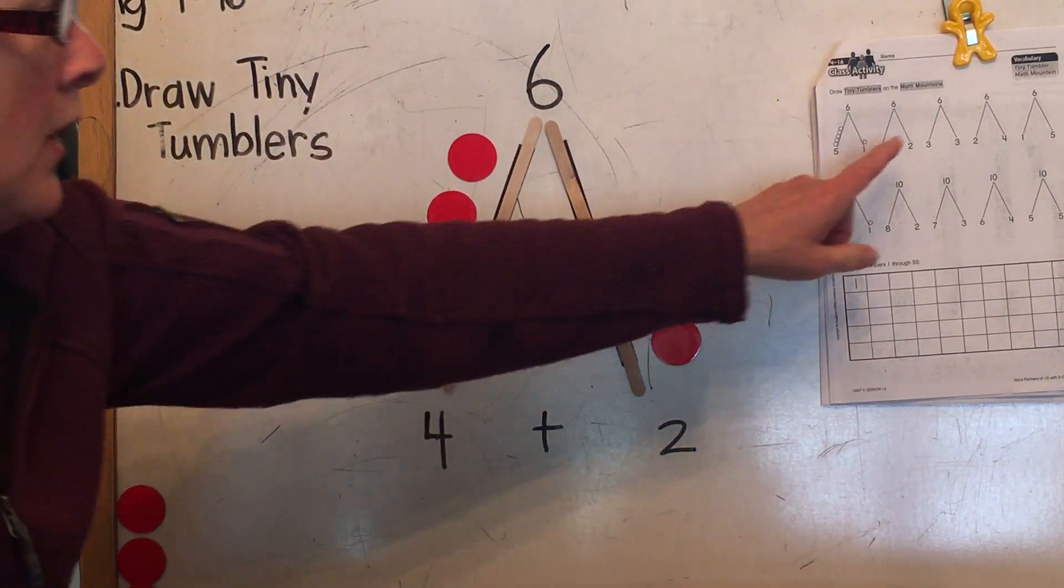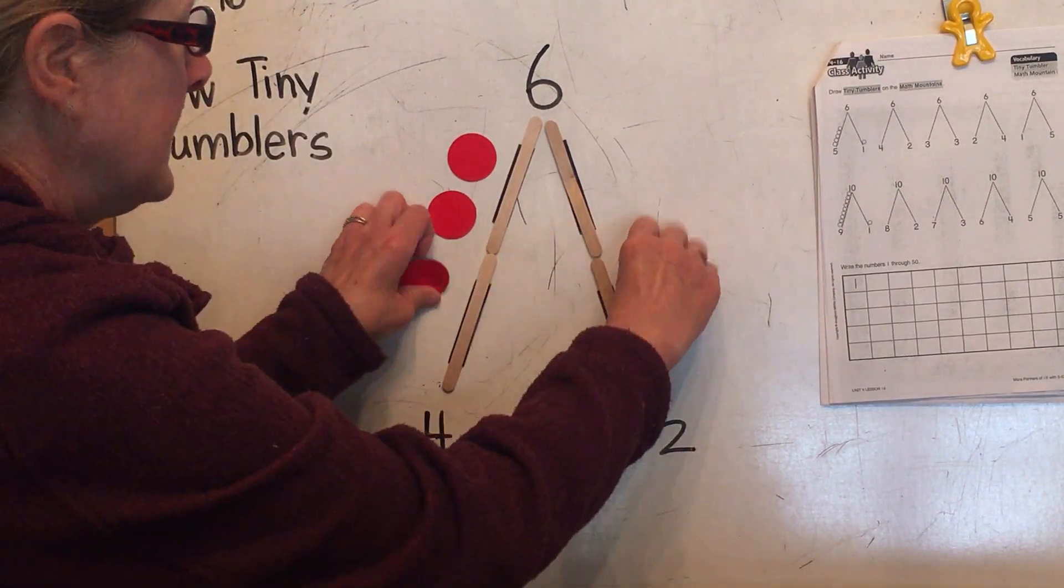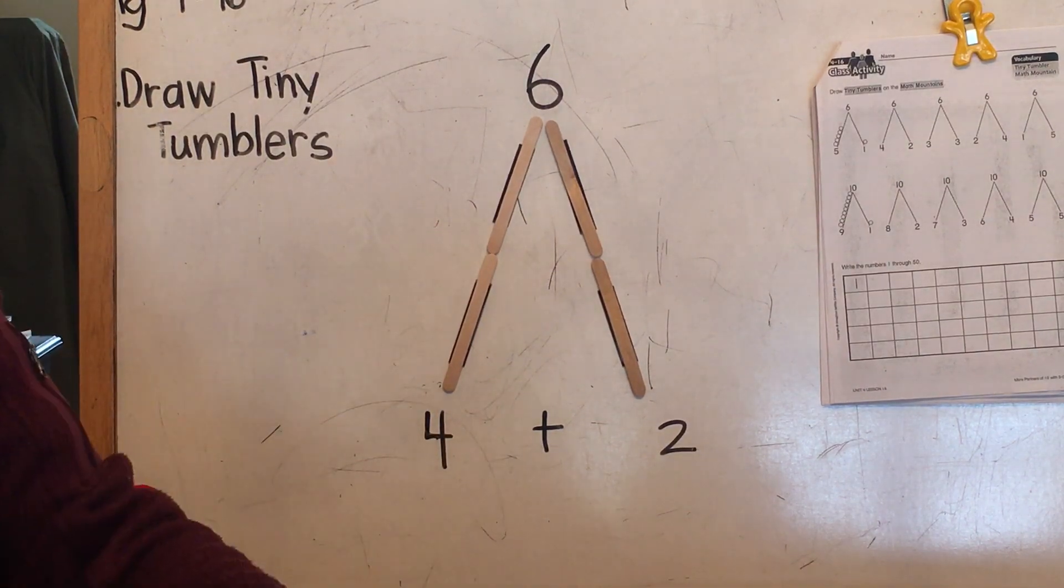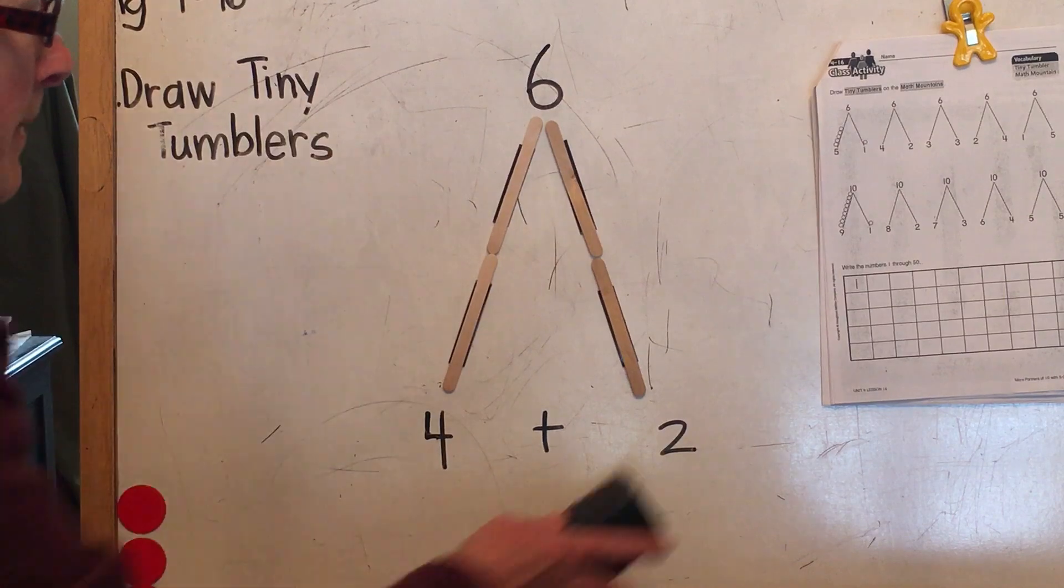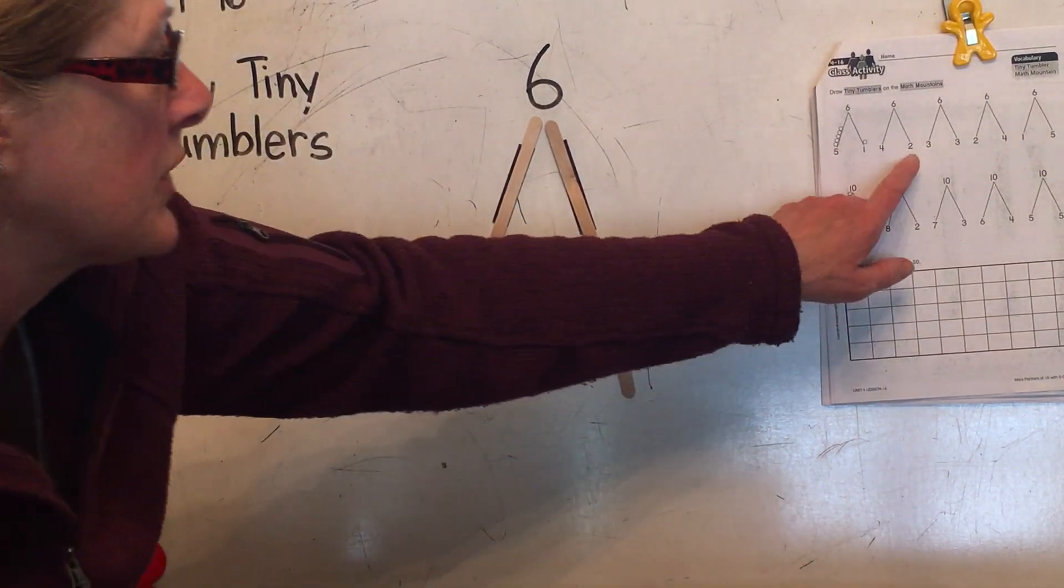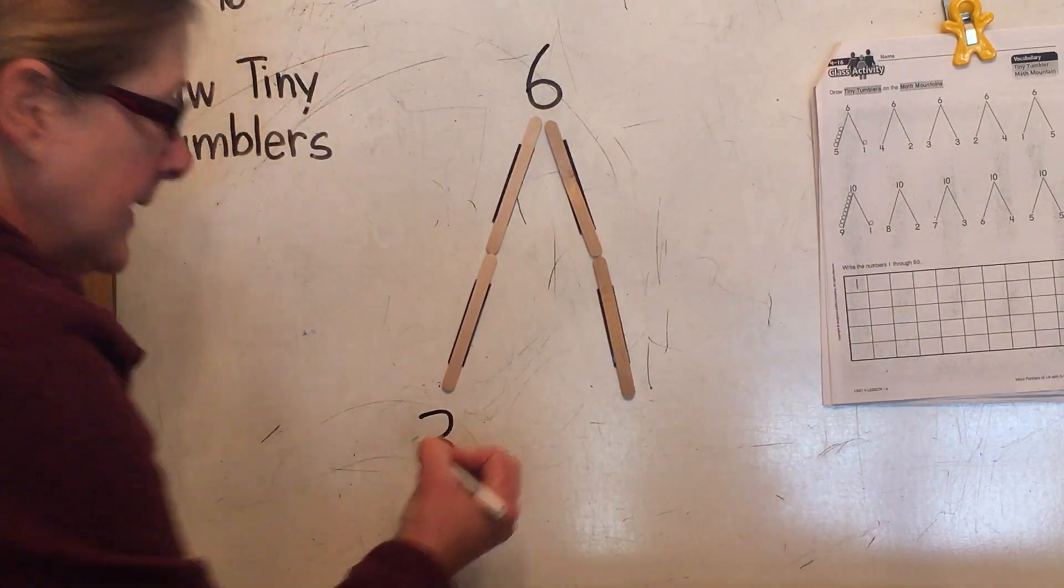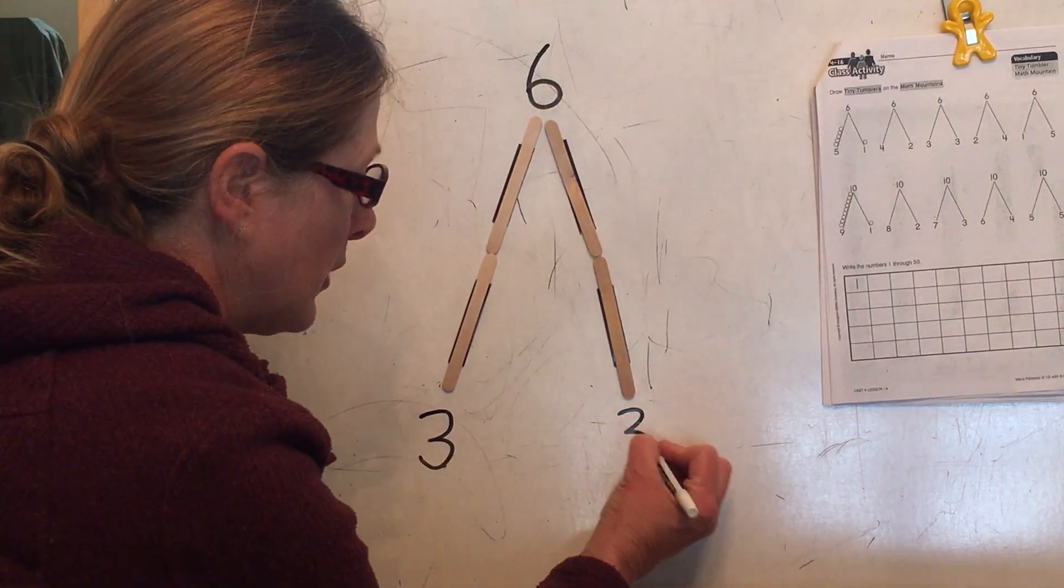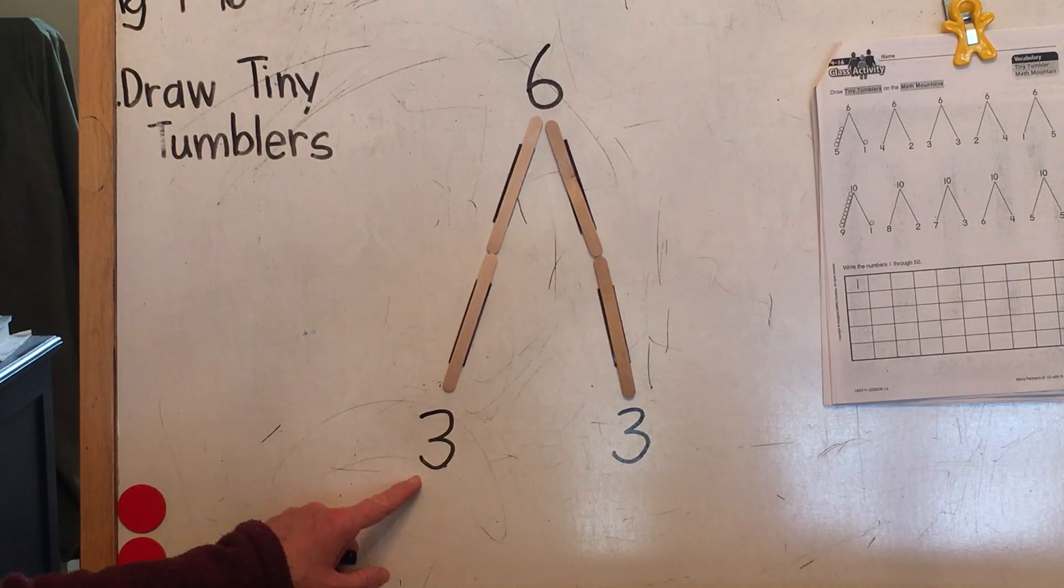This time, I'm going to take away our tiny tumblers. Okay, so I'll have to do all the drawing myself. We're here, we're still on math mountain six, where we have six tiny tumblers. And we learn that three tiny tumblers went this way. And three tiny tumblers went this way. And my job is to just represent the groups.